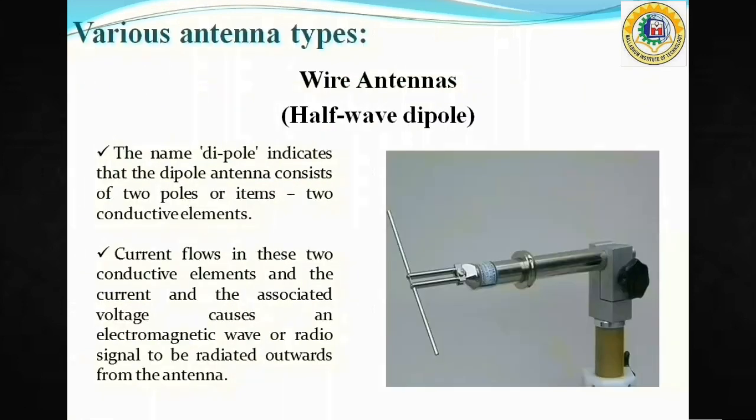Now coming to the various antenna types, starting with the wire antennas, or the half-wave dipole. The name dipole indicates that it consists of two poles or elements, basically two conductive elements. The current flows in these two conductive elements, and the current and the associated voltage cause an electromagnetic wave or radio wave to be radiated outward.